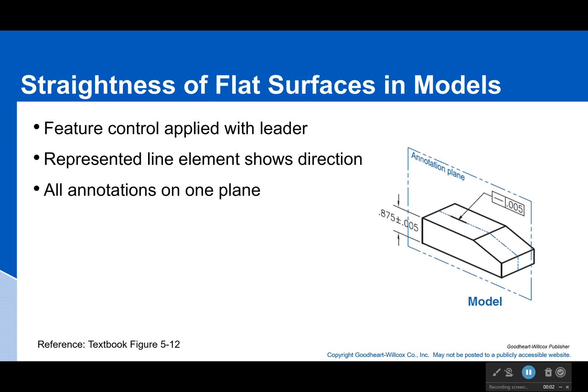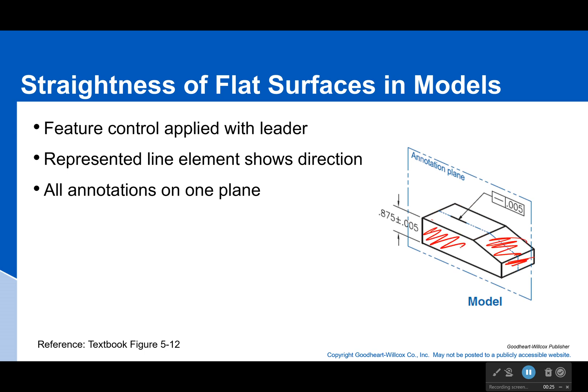As mentioned last time, we're going to see how you apply a straightness tolerance for a new use case. Here we have a size tolerance and we want to make sure this top surface is straight. This straightness tolerance does not affect this plane, this one, or this one — it only controls that top surface. All of our annotations are in one plane, so this is my annotation plane.